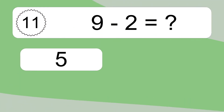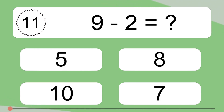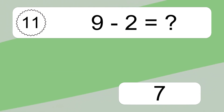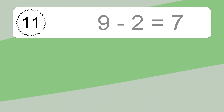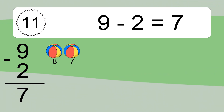9 minus 2 equals what? 9 minus 2 equals 7. Let's count it: 8, 7.